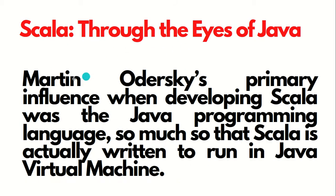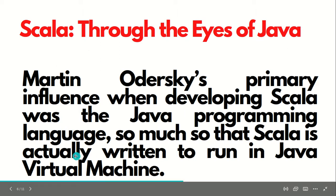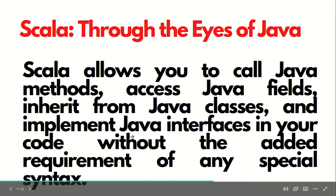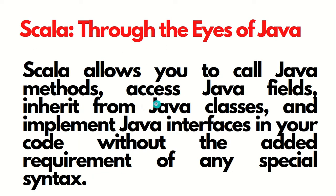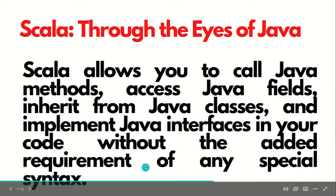Scala through the eyes of Java: Martin Odersky's primary influence while developing Scala was the Java programming language. And if you are good at Java, it will be very easy to learn Scala — it will be a walk in the park. It was developed so that it can run on the JVM. Scala allows you to call Java methods, access Java fields, inherit from Java classes, and implement Java interfaces in your code without any special additional requirements.